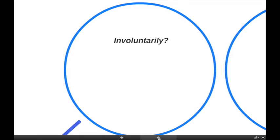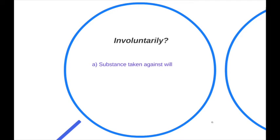So let's look at involuntary intoxication. The first thing to recognize is what we mean by involuntary intoxication — it is a very limited concept, quite correctly, because we only wish to exculpate people where they really didn't choose to become intoxicated. Three situations can raise involuntary intoxication. First, the substance is taken against your will. If you are drugged, if someone spikes your drink, if somebody injects you or forces you to take something, we are willing to accept that it was involuntary intoxication.